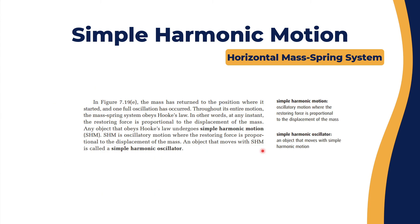It is a golden rule that all harmonic motion obeys Hooke's Law. Any mass-spring system obeys Hooke's Law — at any instant the restoring force is proportional to the displacement of the mass. Any object that obeys Hooke's Law undergoes simple harmonic motion, abbreviated as SHM. Simple harmonic motion is oscillatory motion where the restoring force is proportional to the displacement. An object that moves with simple harmonic motion is called a simple harmonic oscillator.